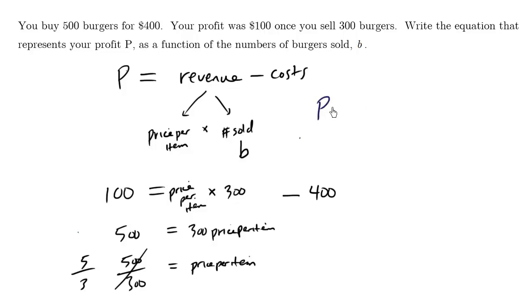So P, we want P in terms of a general B value, equals, and this is price per item, which is 5 over 3, times the number sold, which is B, minus the cost. This is the revenue minus the costs. And the cost here is guaranteed to be $400. So this here is a nice linear function, which is very useful.